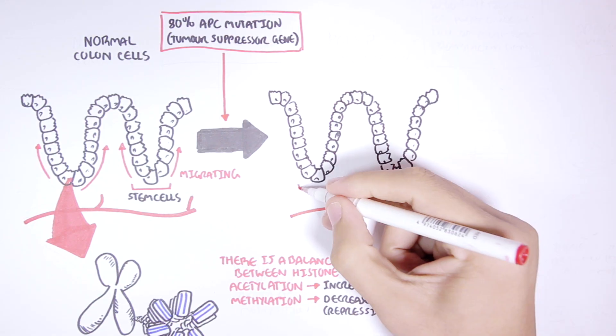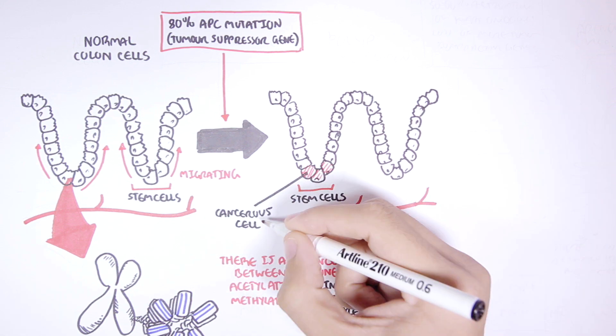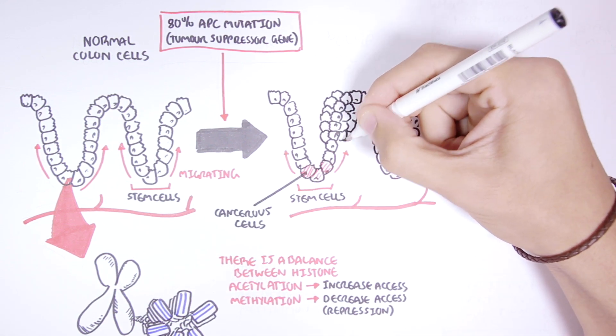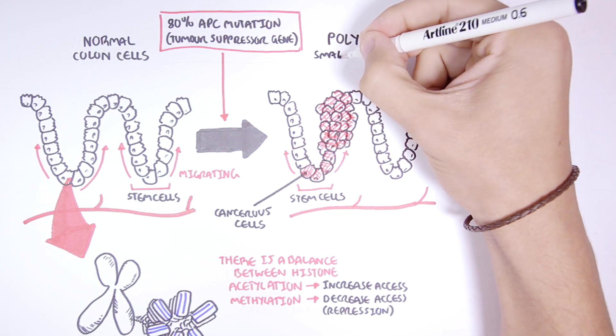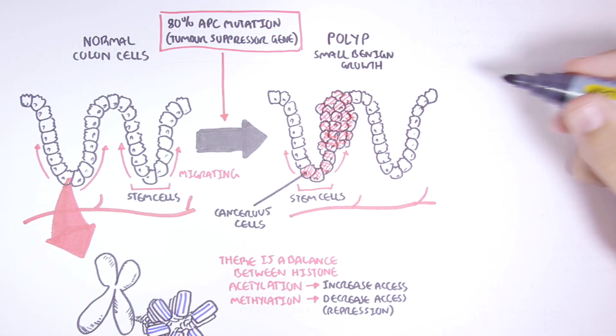As the abnormal cell, the potential cancer cell moves up, it will begin dividing and dividing, creating a polyp, which is usually a small benign growth.